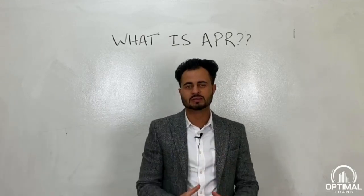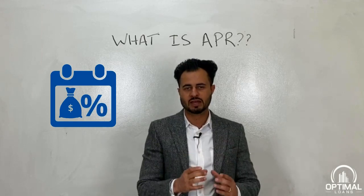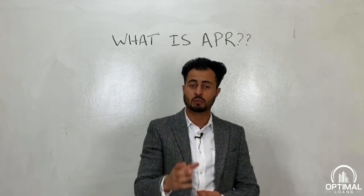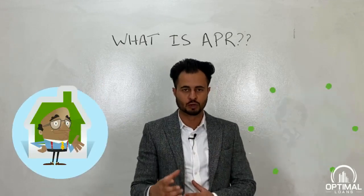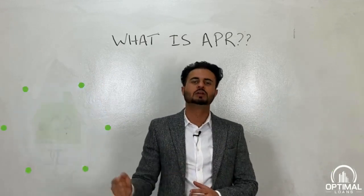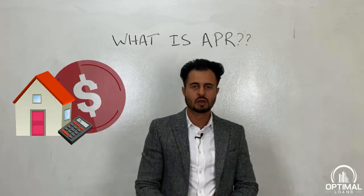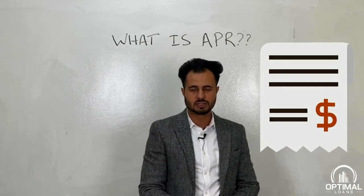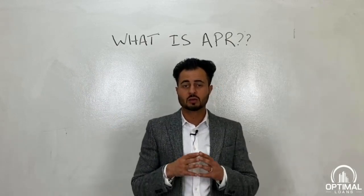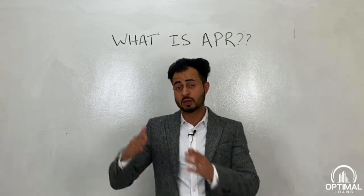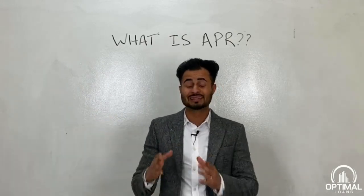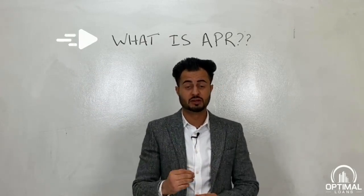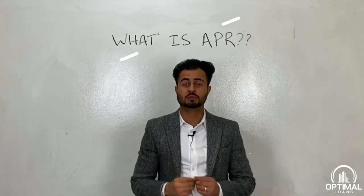APR is a yearly percentage of the money that you're going to borrow for your refinance or your mortgage, plus the cost of the loan, plus any upfront finance charges — all of that that you're going to pay over the life of the loan, quantified in a yearly figure. That's what an APR is.